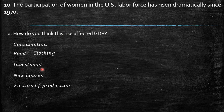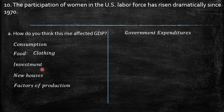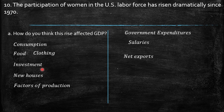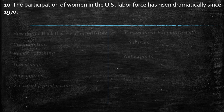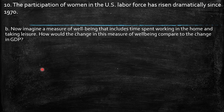Government expenditures also rise, for example, salaries for women working in the public sector. Net exports are affected too, as women become involved in enterprises and purchase imported goods. Now imagine a measure of well-being that includes time spent working in the home and leisure. How would the change in this measure of well-being compare to the change in GDP?